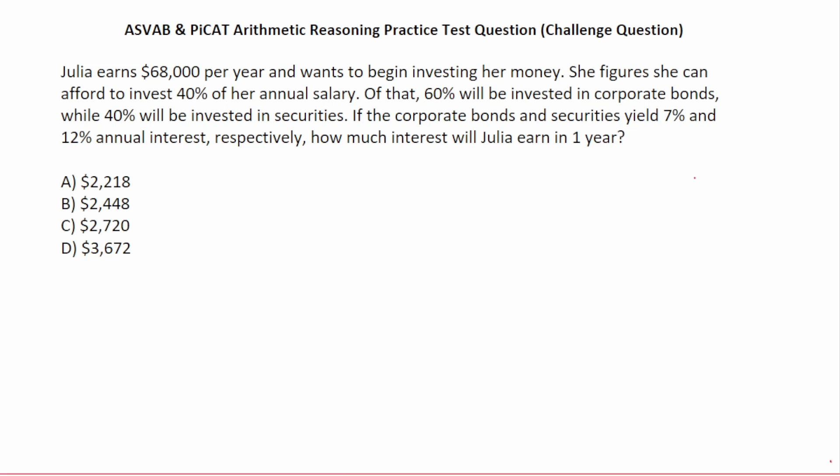This challenge question for the arithmetic reasoning subtest of the ASVAB and ASVAB PYCAT says: Julia earns $68,000 per year and wants to begin investing her money. She figures she can afford to invest 40% of her salary. Of that, 60% will be invested in corporate bonds, while 40% will be invested in securities. If the corporate bonds and securities yield 7% and 12% annual interest respectively, how much interest will Julia earn in one year?